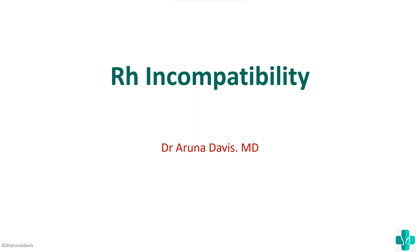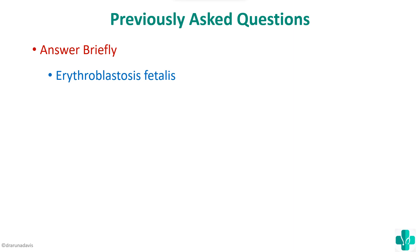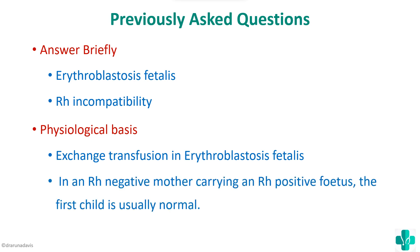In this video we are going to see about Rh incompatibility. This is a very important question for exams because it has been asked multiple times in multiple forms — for example, as an answer-briefly question on erythroblastosis fetalis, as a short note on Rh incompatibility itself, and as physiological basis questions like the basis of exchange transfusion in erythroblastosis fetalis, or why the first child is usually normal. We will see each one by one.